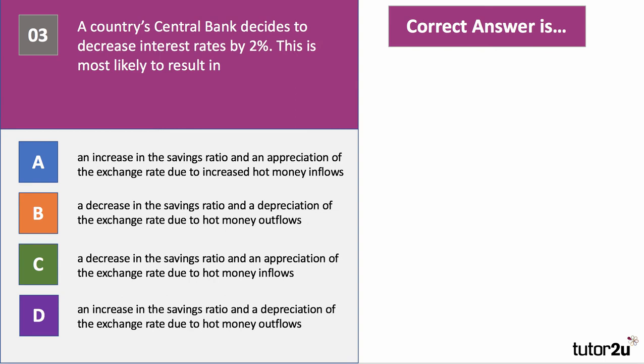Question three: a country's central bank decides to decrease their policy interest rates by two percent. What is this most likely to result in? Have a look at the four options and come back when you want the answer. They've cut interest rates by two percent — that is an expansionary monetary policy.